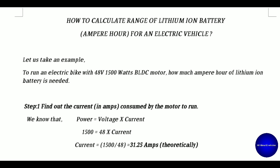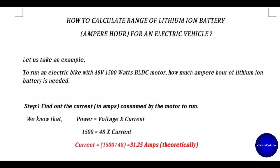Step one: first, find out how much current in amperes is consumed by the motor. To run the motor, how much current is it taking? We know that power equals voltage multiplied by current. So the motor power is 1500 watts and the voltage of the motor is 48 volts. We can easily calculate the current: current equals 1500 divided by 48, which equals 31.25 amperes. This is the theoretical current consumed by the 1500-watt motor.